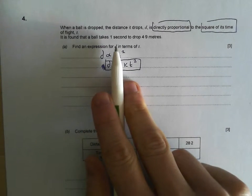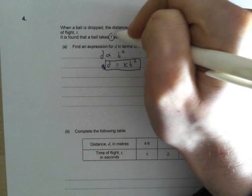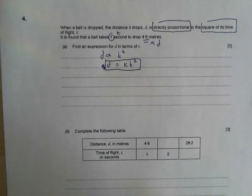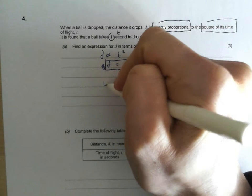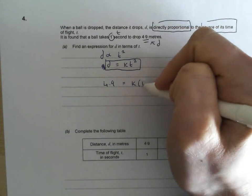It is found that the ball takes 1 second, so that's my time, so that's going to be my t. To drop 4.9 meters, that's going to be my d, my distance. Okay, so 4.9 meters is going to be equal to k lots of my time, that's 1 squared.